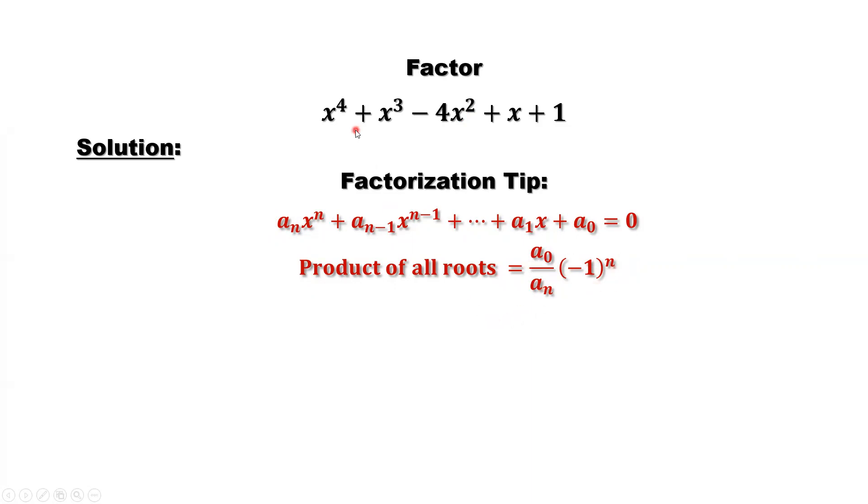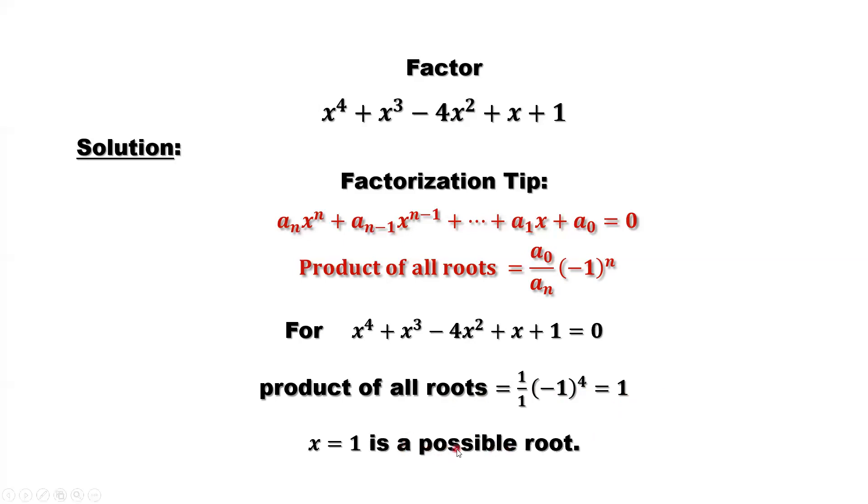Back to our question. If we want to use the long division or grouping method, we need to know at least one root. So we are trying to find one root using this tip. Look at this here. Our question has n is 4, and a0 and a4 is 1. So here, product of all roots equals 1 over 1 times negative 1 to the power 4, which is positive 1. So we know that all integer roots, the product of all integer roots equal to 1. That means x equals 1 is a possible root. Here we only say it's possible, we're not sure.